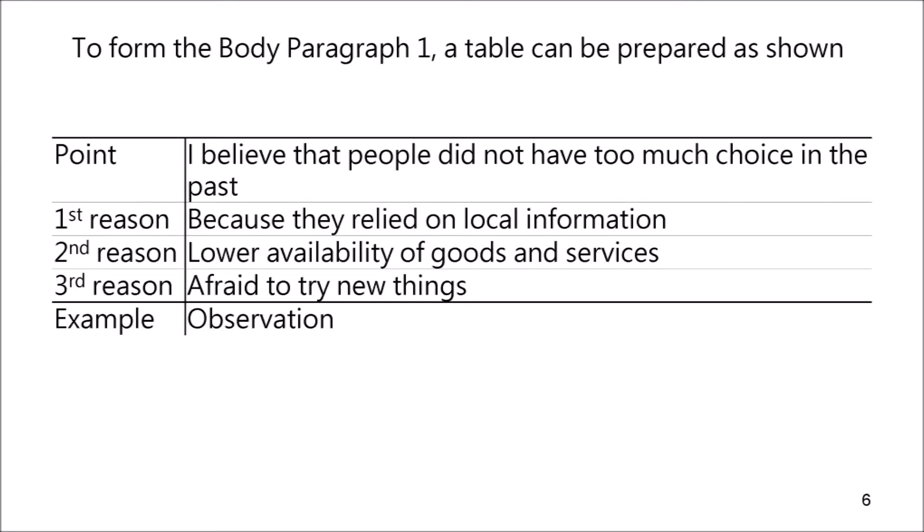To form body paragraph 1, a table can be prepared as shown. You will need to write your points, some reasons, and an example. As a point, I say that people did not have too much choice in the past. My first reason is that they relied on local information; the second reason is that there was lower availability of goods and services; and the third reason is that they were afraid to try new things. As an example, I presented an observation.